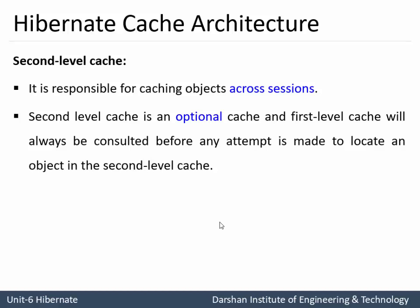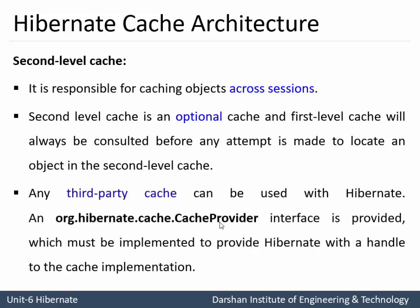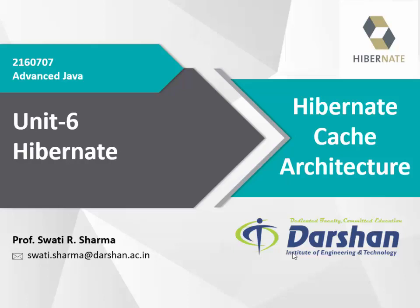In Hibernate cache architecture, whenever the application requires an object, the first thing to check is the first level cache. Only if the object is not found there will it switch over to the second level cache. Any third-party cache can be used with Hibernate - for example, the org.hibernate.cache.CacheProvider interface, available in the Hibernate library, must be implemented to provide Hibernate with a handle to the cache implementation. So a third-party cache can also be configured as part of the second level cache. With this, we complete Hibernate cache architecture.